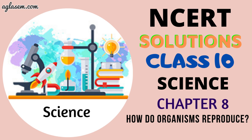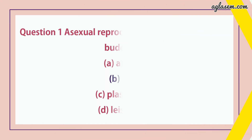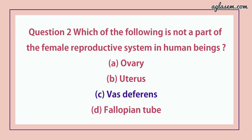Let's discuss question and answers. Question number 1 says: asexual reproduction takes place through budding in — answer is B, that is, yeast. Question 2: which of the following is not a part of a female reproductive system in human beings? Answer is C, that is, vas deferens.